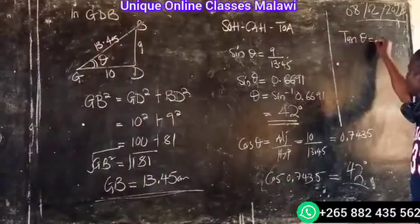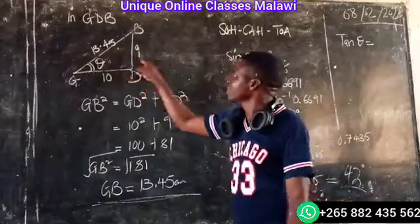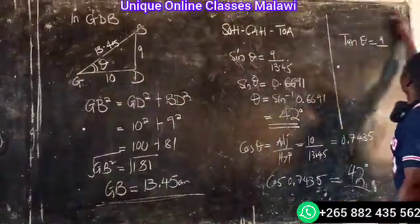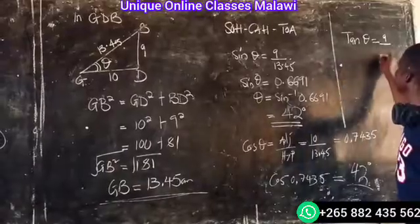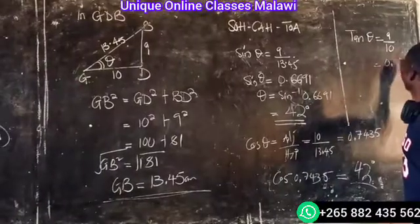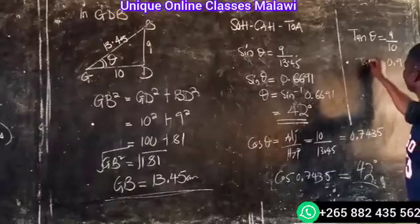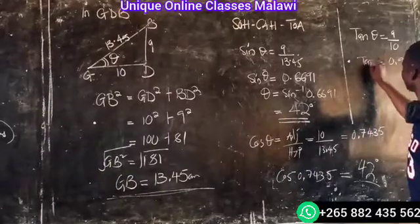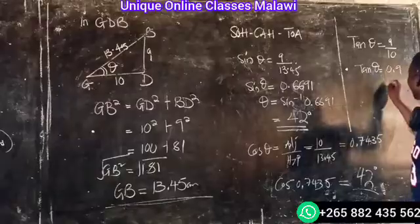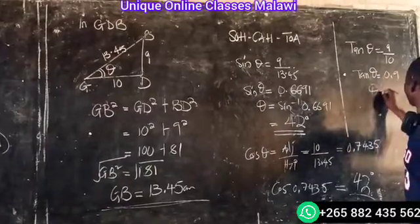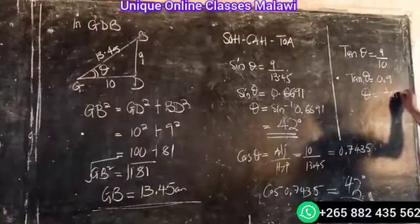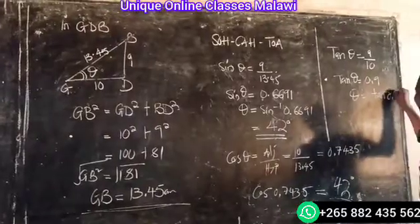This value is 4. What was it here? 9. So 9 divided by the hypotenuse, which is 10. This gives approximately 42 degrees.